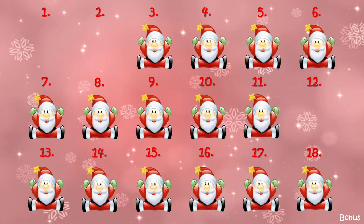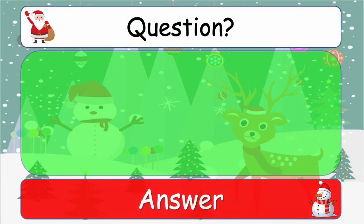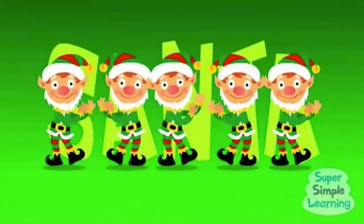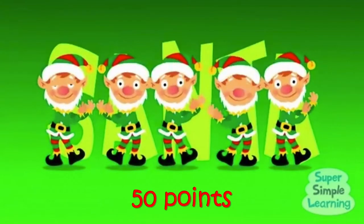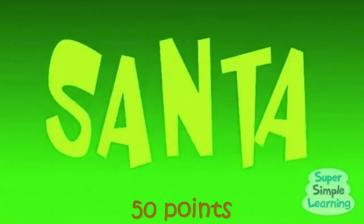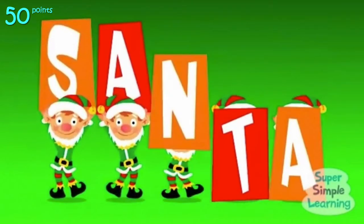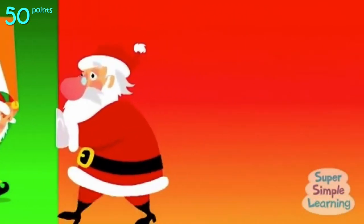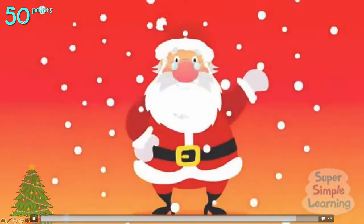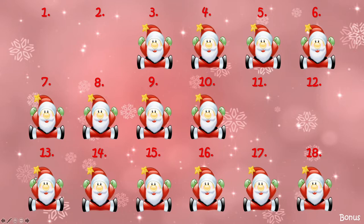The next one I'm going to click is number eleven — same again, question and answer. Five claps here: one, two, three, four, five — fifty points! This is the fifty point slide, and fifty points appears in the top left corner. You can click on the fifty points or click on the Christmas tree to go back to the main question slide.